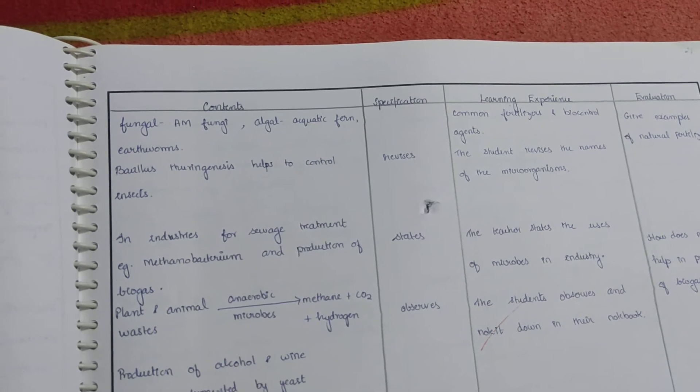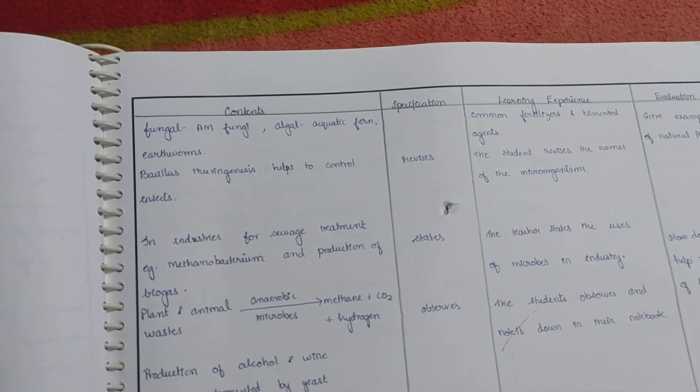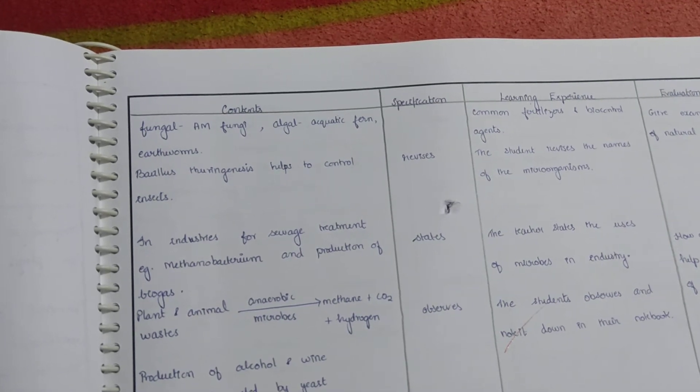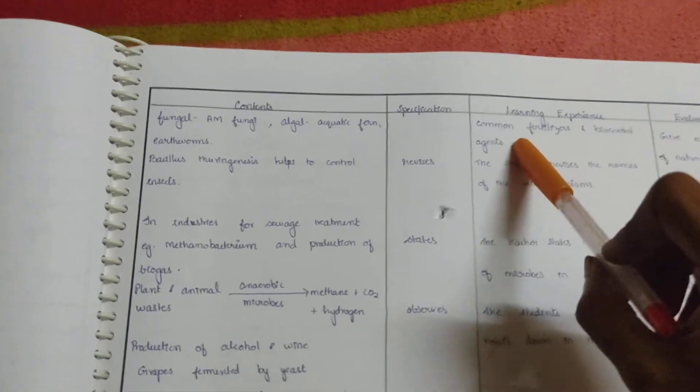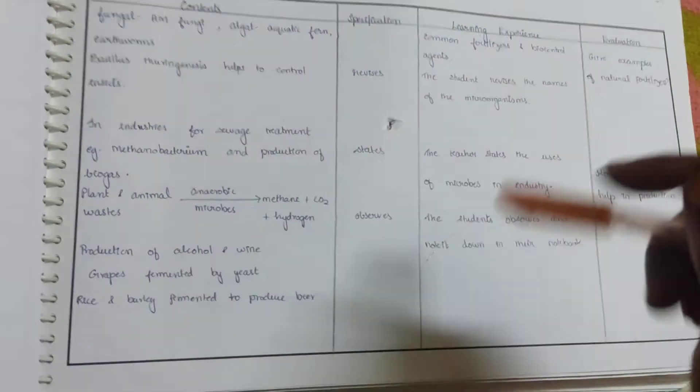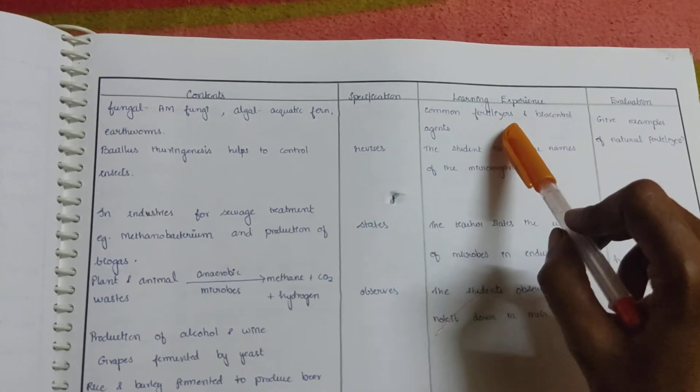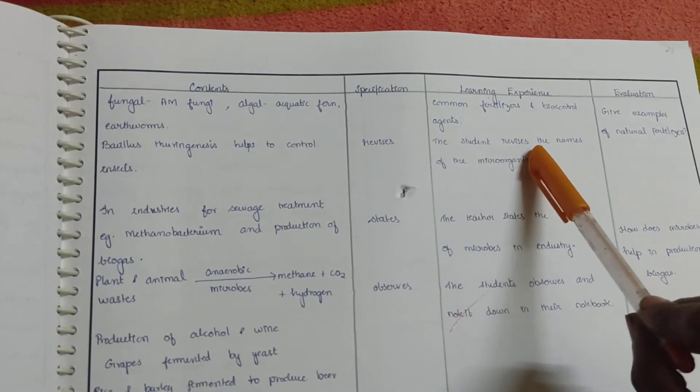Next, Bacillus thuringiensis helps to control insects. The teacher illustrates certain common fertilizers and biocontrol agents. The student revises the names of the microorganisms.